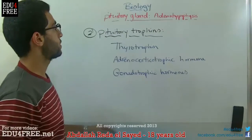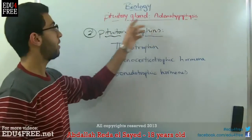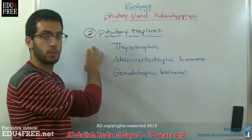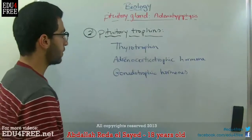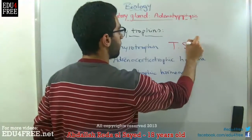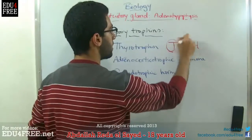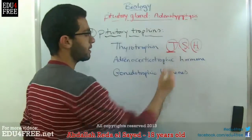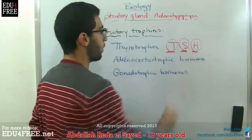The next type of hormones secreted by the adenohypophysis of the pituitary gland are the tropic hormones, and here we have three types. The first is thyrotrophin, which we refer to as TSH — the thyroid stimulating hormone — as it stimulates the thyroid gland.